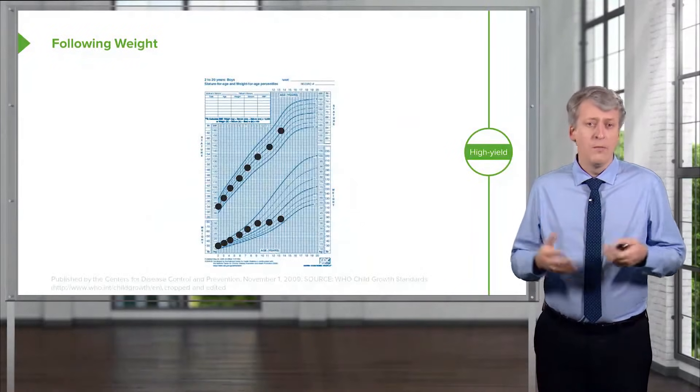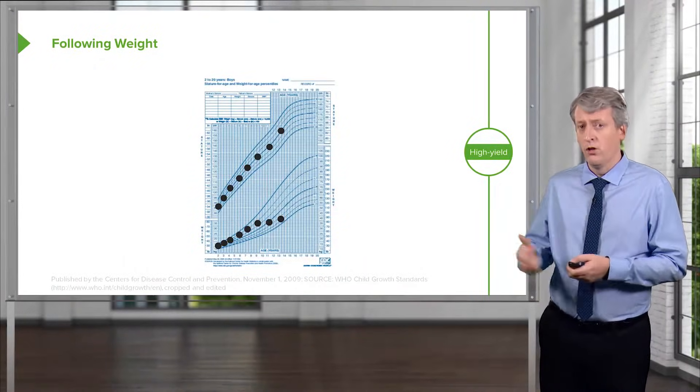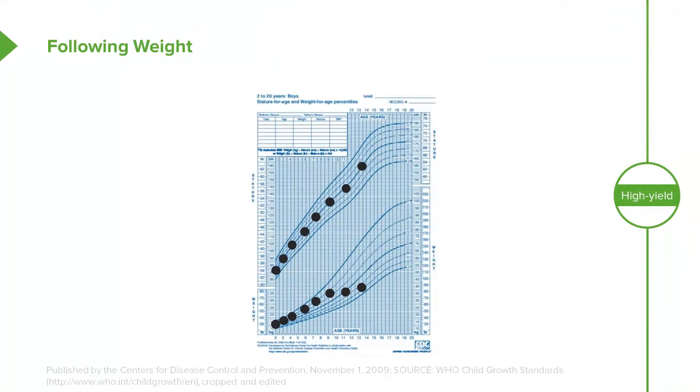For example, here is a child who is growing along their growth curves. You can see the top line, which is their height, has been going pretty well, tracking appropriately along about the 50th percentile. In this child, they were at the 75th percentile for weight, which is fine, until an age, right here you can see it, where the weight really started tailing off.